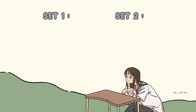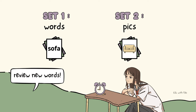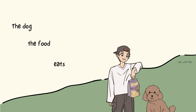Number four is card matching. Use two sets of flash cards or mini cards — words on one set and pictures on the other. Mix the cards, place them face down, set a timer, and ask the student to match the words to the right pictures as fast as they can. You can repeat it the next class to review the words. It's best to focus on a specific topic to make it easier for them.